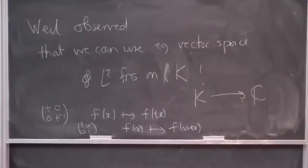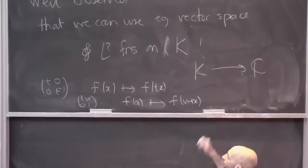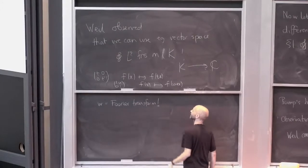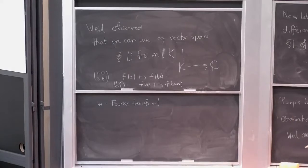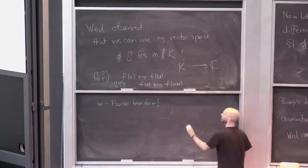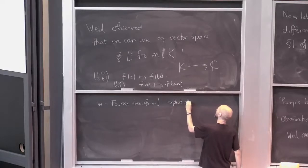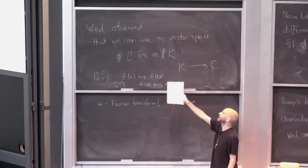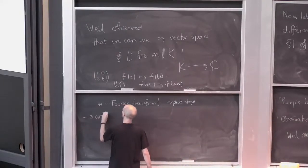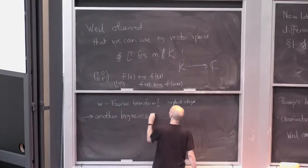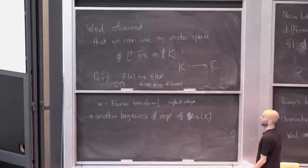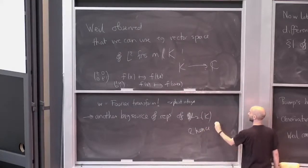This is I think the Weil representation or oscillator representation. Veil observed that a big vector space of L²-functions on K — functions from K to C that are locally constant and not too badly behaved — works as follows: the diagonal matrix (t, 0; 0, t⁻¹) acts by scaling, f(x) maps to f(tx); the matrix (1, u; 0, 1) acts by translation, f(x) maps to f(u + x). And how to get W: we need W² to give something trivial, so W turns out to be the Fourier transform. When you do the Fourier transform twice you get back to f(x) up to some fudge factor.